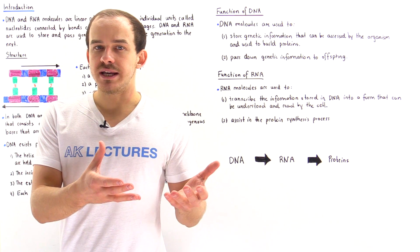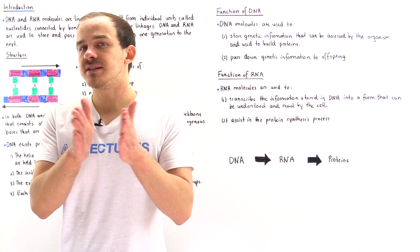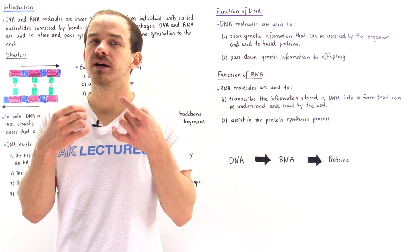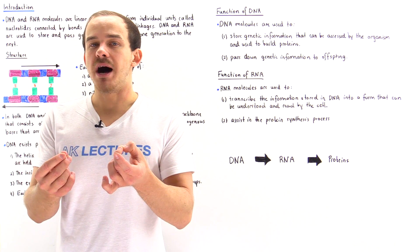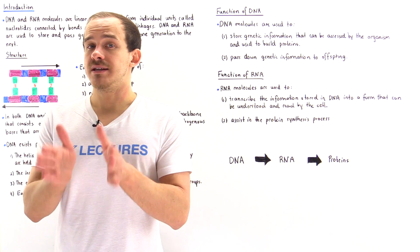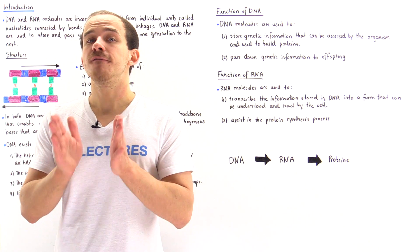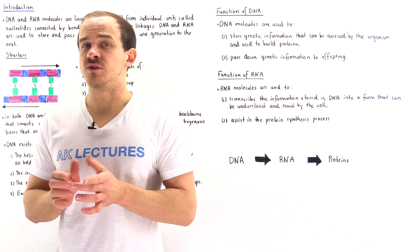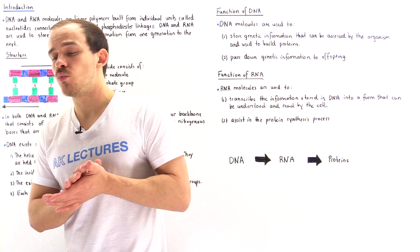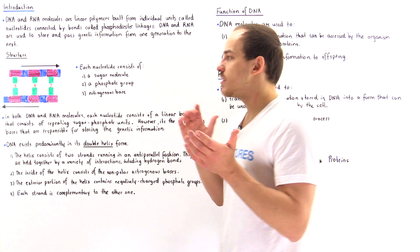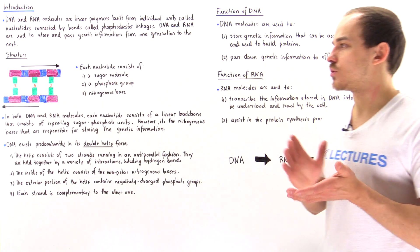Now in proteins the bonds connecting the amino acids are peptide bonds, but in nucleic acids these bonds are phosphodiester bonds. We'll see exactly what these bonds look like in a future lecture.